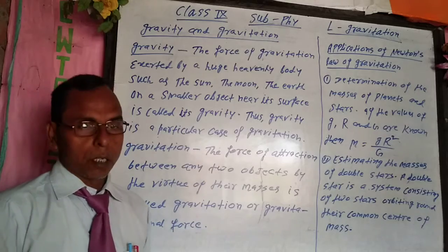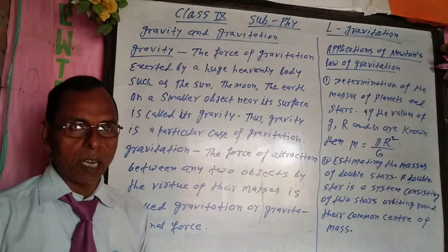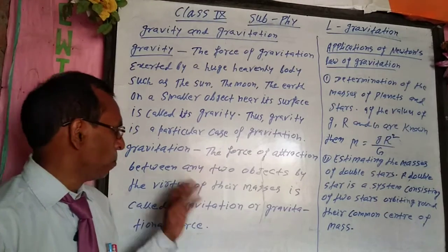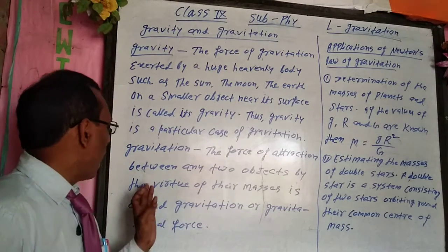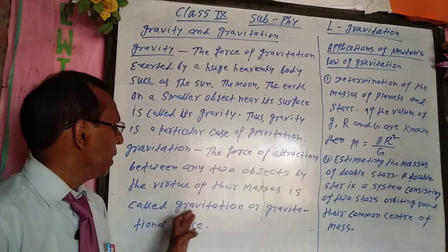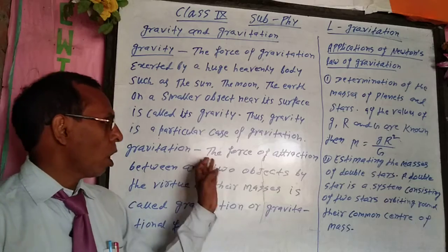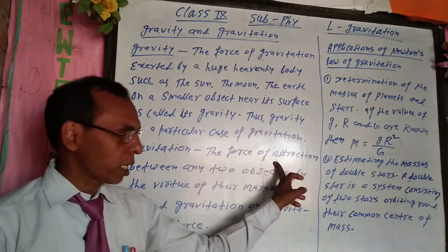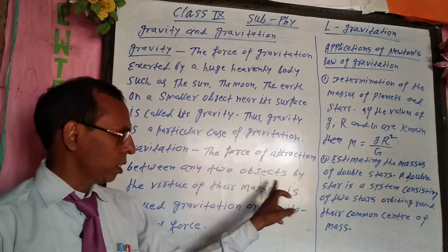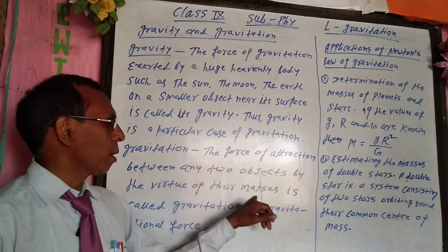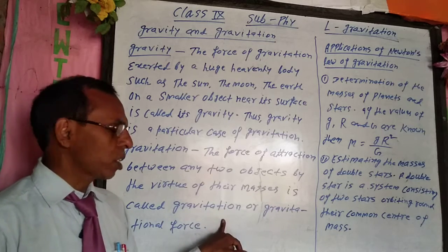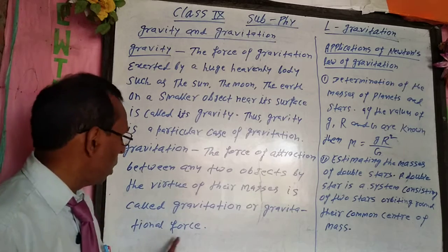Gravitation: The force of attraction between two objects, between two bodies, by the virtue of their masses is called gravitation. The force of attraction between any two objects by the virtue of their masses is called gravitation or gravitational force.